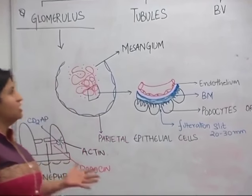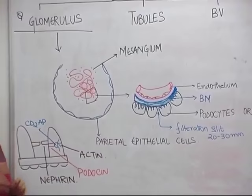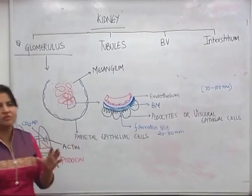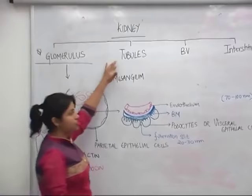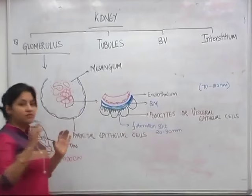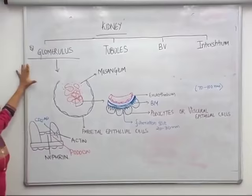We are studying kidney pathology - nephropathology. The kidney is divided into four parts, and nephropathology can be easily studied by dividing it accordingly: glomerulus, tubules, blood vessels, and interstitial. Out of these, the most important part is the glomerulus, so today we will focus our attention on the glomerular diseases.